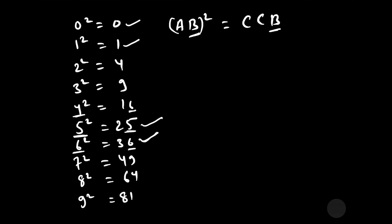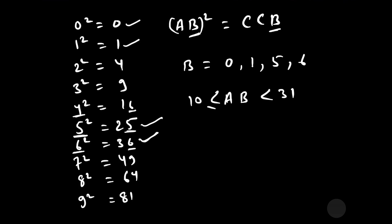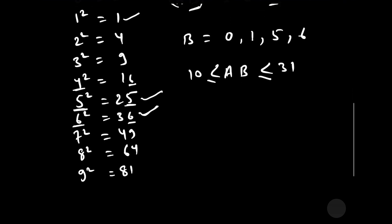For 7, 8, and 9, the unit digit does not repeat after squaring, so B cannot be 7, 8, or 9. Therefore, the possible values of B are 0, 1, 5, or 6. The two-digit numbers between 10 and 31 with unit digit 0, 1, 5, or 6 are: 10, 11, 15, 16, 21, 25, and 26.